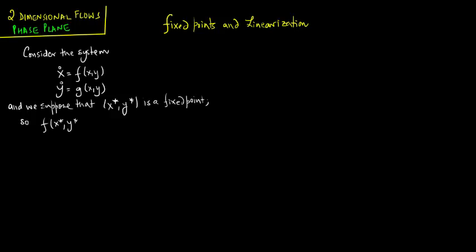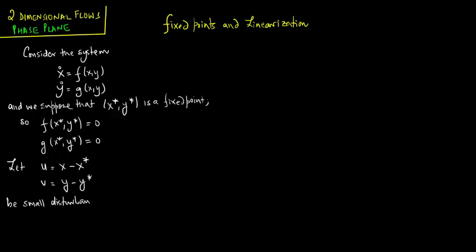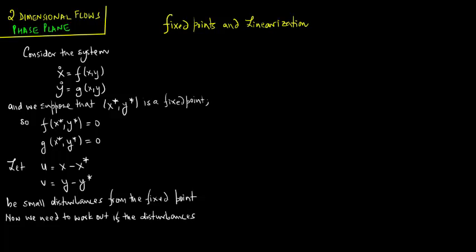So f(x*, y*) = 0 and g(x*, y*) = 0. Let u = x − x* and v = y − y* be small disturbances from the fixed point. Now we need to work out if the disturbances grow or decay.